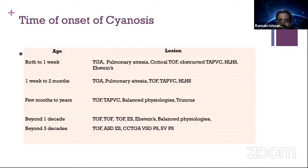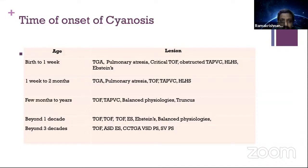What differentiates a DM examination from an undergraduate or postgraduate examination is the understanding of natural history of each of these diseases and your in-depth understanding of hemodynamics. These are the two important areas you are adding upon. What is the natural history of TGA? What is the natural history of tetralogy? The same TOF case will be kept in an undergraduate exam, an MD exam, and a DM exam. What is analyzed differently will be natural history and hemodynamics.